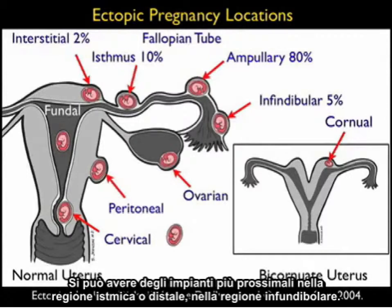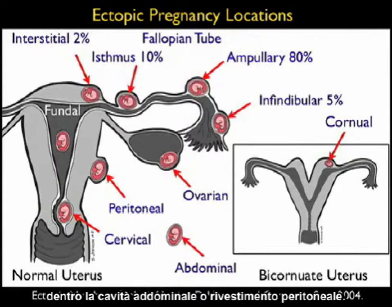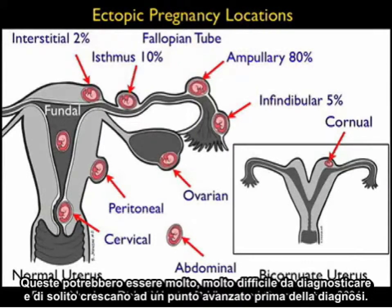We can have implantations more proximal within the ismal region or distal within the infundibular region. Tough ectopics to diagnose are those that implant within the ovary, within the abdominal cavity, or within the peritoneal lining. These can be very hard to diagnose and commonly grow to an advanced stage before diagnosis.